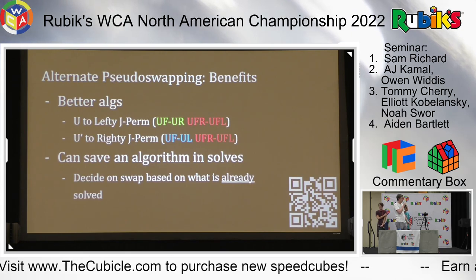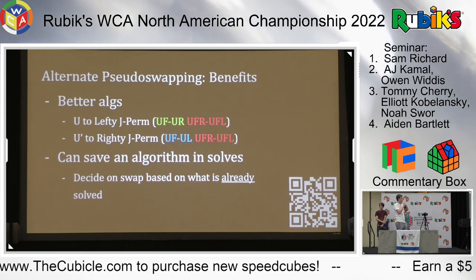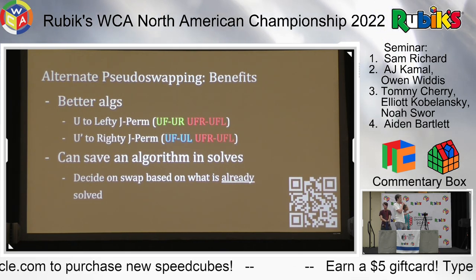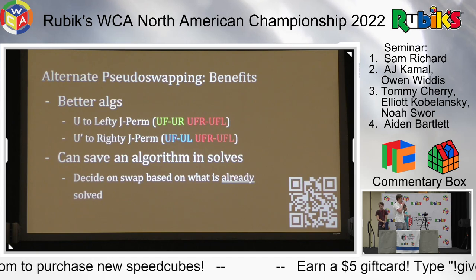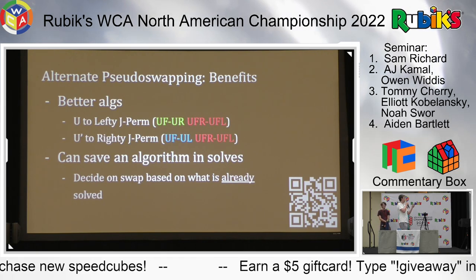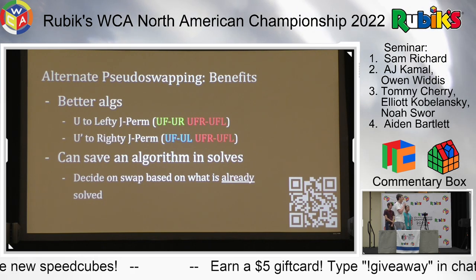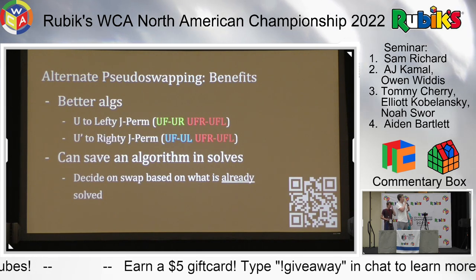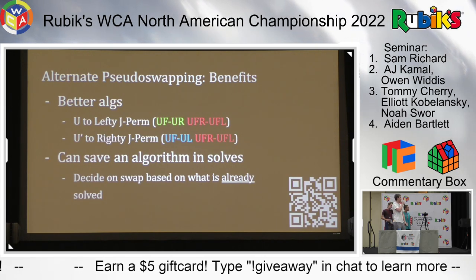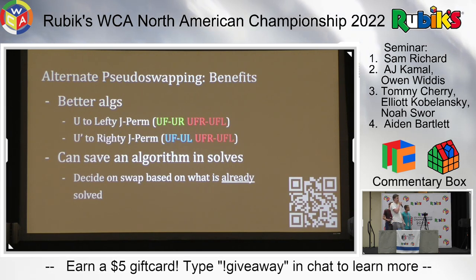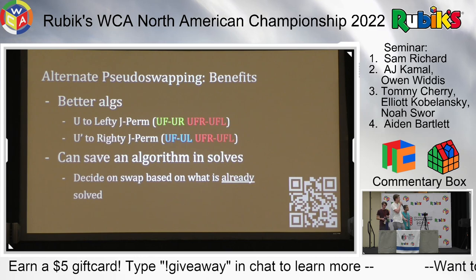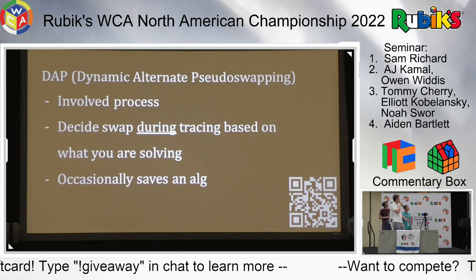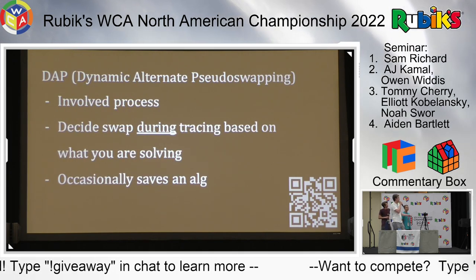If something is already pseudo-solved in place, we can use an algorithm that won't affect those pieces, meaning we won't have to apply another algorithm to the cube. Saving an algorithm is quite key because it can reduce up to 10 percent or more of a solve.